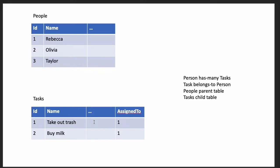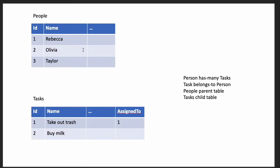If I add the key to the tasks table pointing to the people table, then we say that a person has many tasks. This design suggests a person could have many tasks — like Rebecca now having two tasks — and we say the task belongs to the person. We also refer to the people table as the parent table and the tasks as the child table.